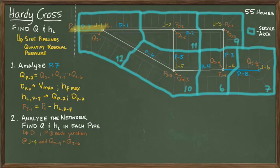As a final task in the Hardy Cross method, you compute the residual pressure at junction four by starting with the pressure at junction one and then subtracting the head loss in pipes six and four.